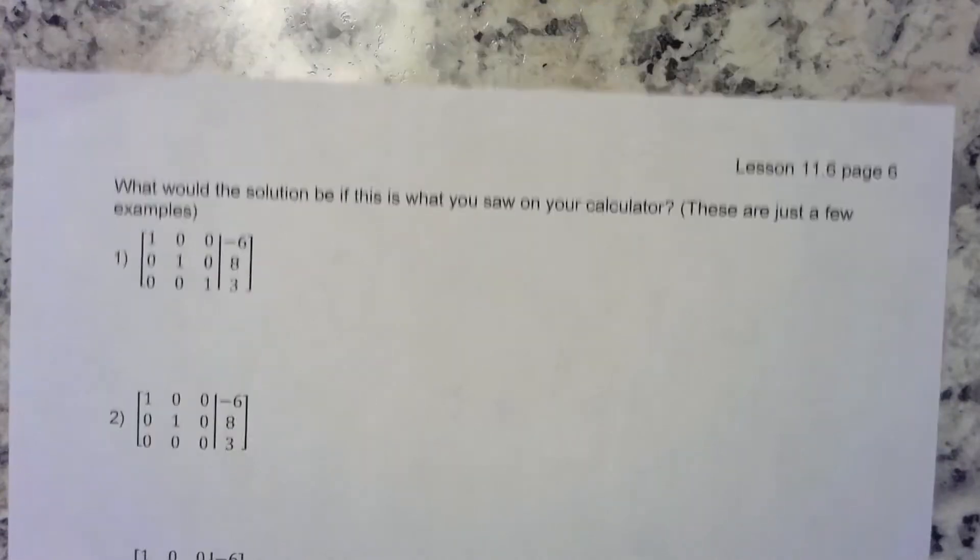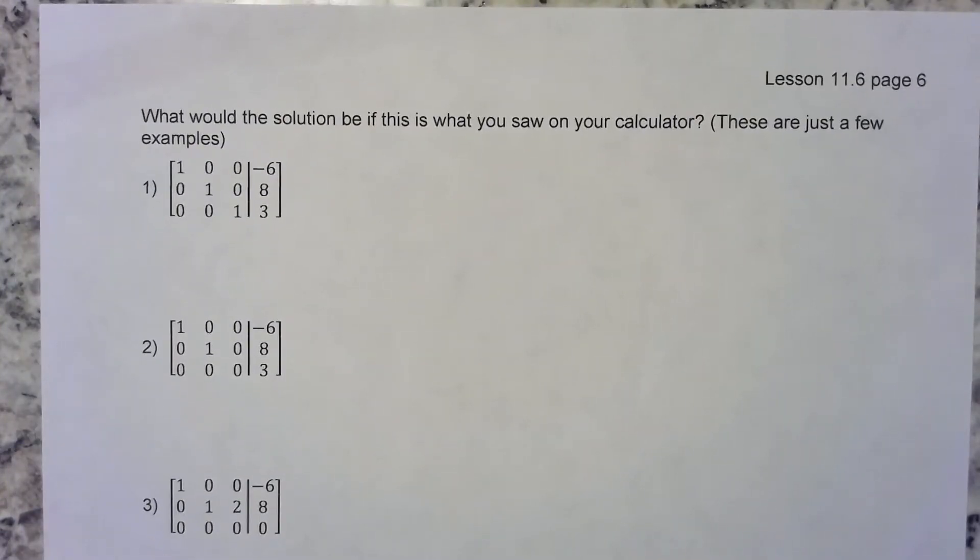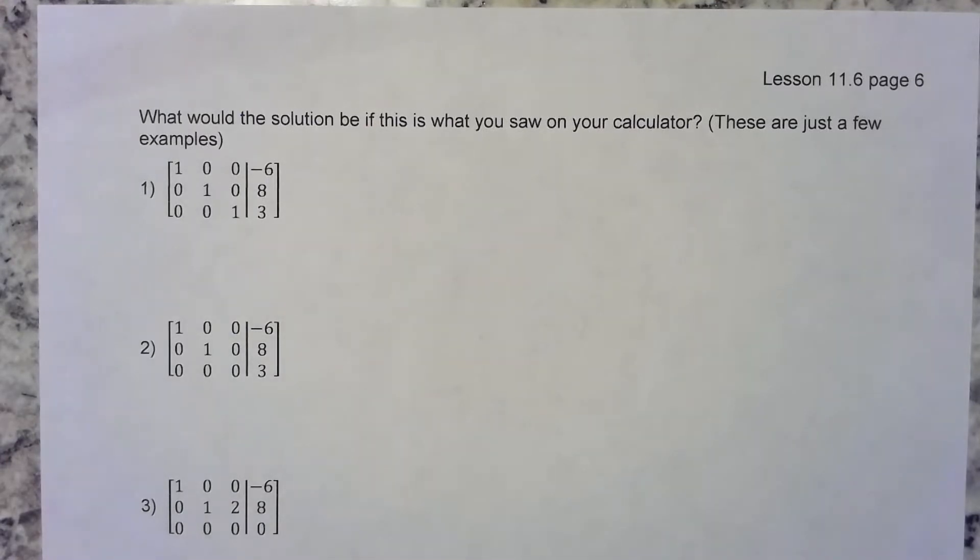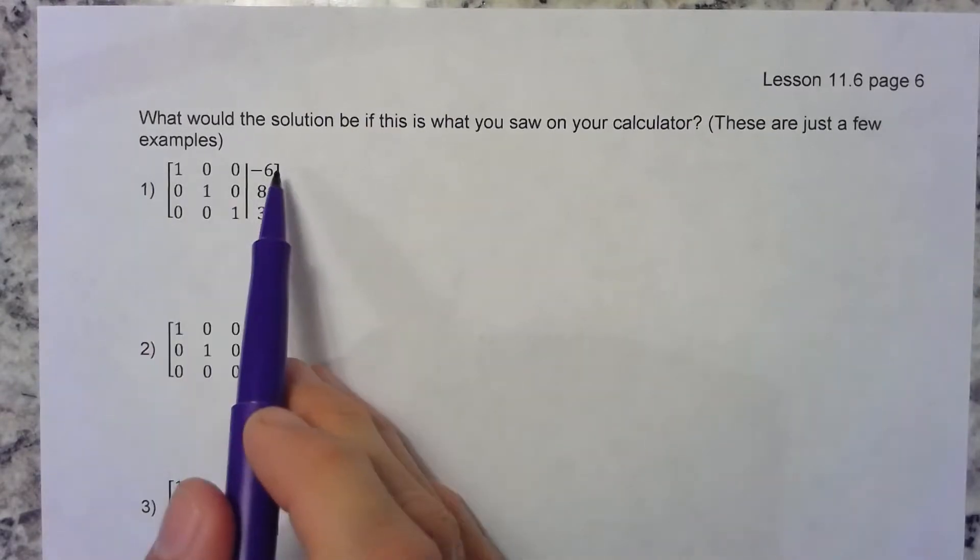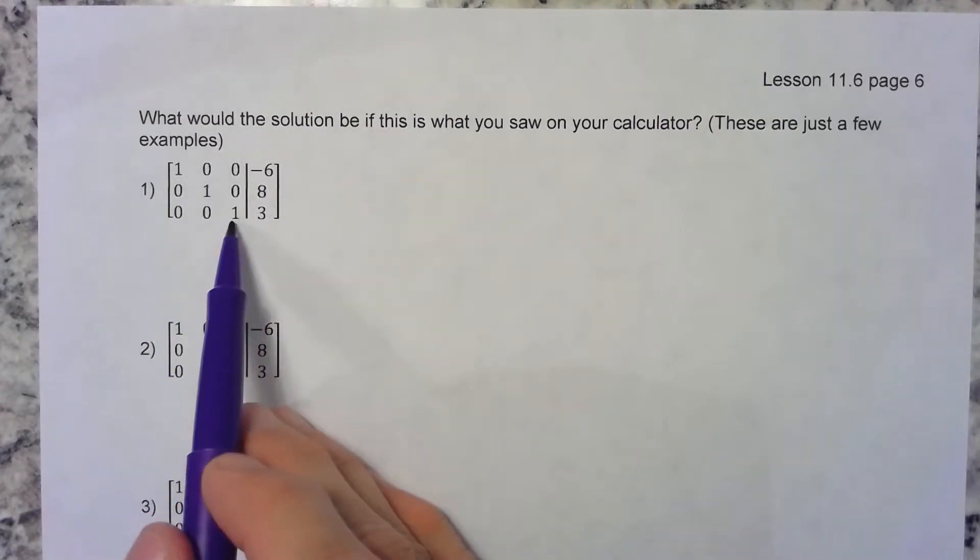What if on your calculator you see some of these show up as your answer matrix? What would these mean? This means x equals negative 6, y equals 8, z equals 3. So this actually means (−6, 8, 3).